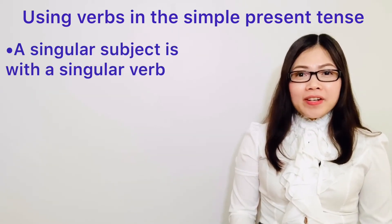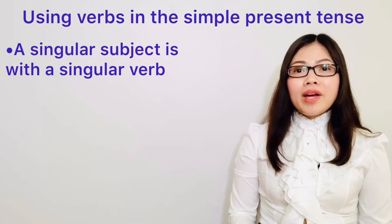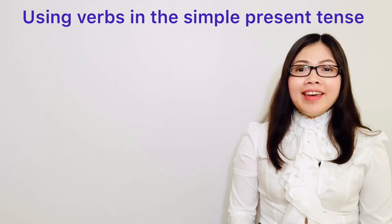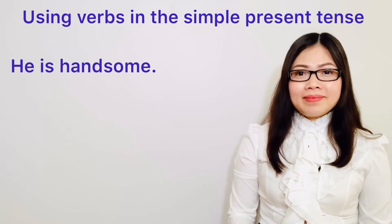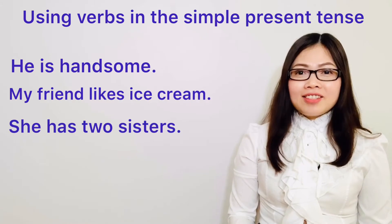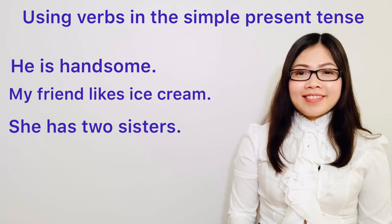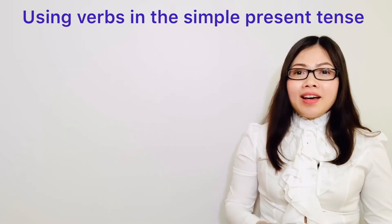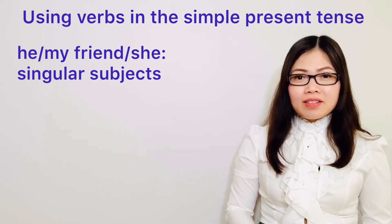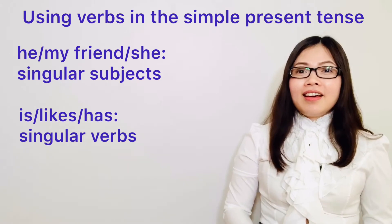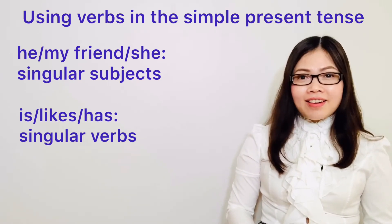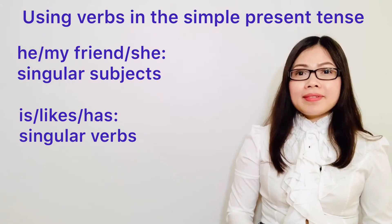And a singular subject is always with a singular verb. For example, he is handsome. My friend likes ice cream. She has two sisters. So, he, my friend, and she are singular subjects. Is, likes, and has are singular verbs.